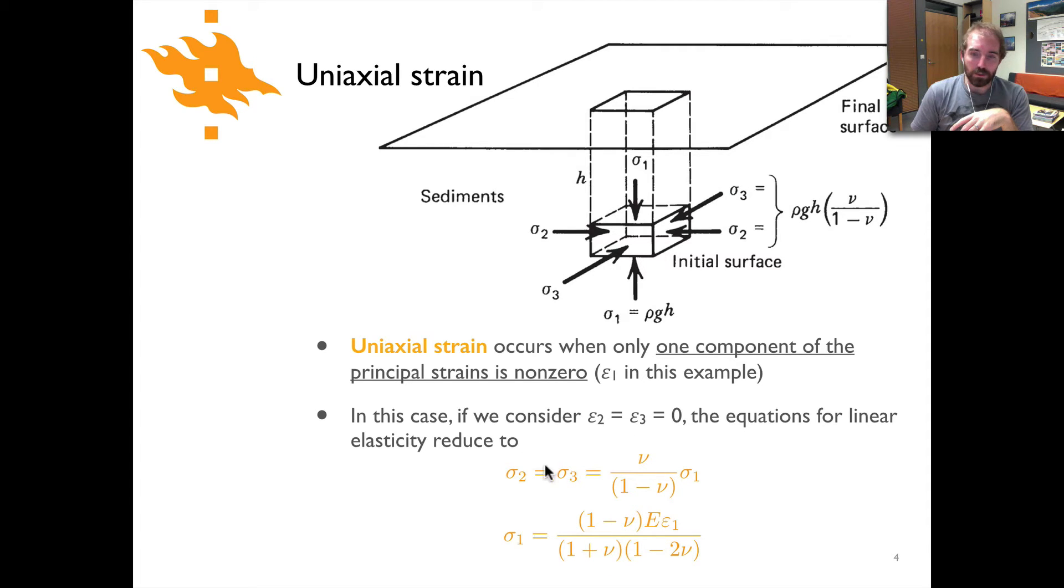And in that case the relationships you find in terms of stress are that sigma two is equal to sigma three which is equal to nu over one minus nu times sigma one. And so if you rearrange that relationship and plug in the values for sigma two and three and solve, you'll end up with something where sigma one is equal to one minus nu times E times epsilon one. Again this is Young's modulus. Nu, in case you've forgotten, is Poisson's ratio and that's divided by one plus nu times one minus two nu. And again this all comes from two lectures ago, just plugging in the values for the case of uniaxial strain.